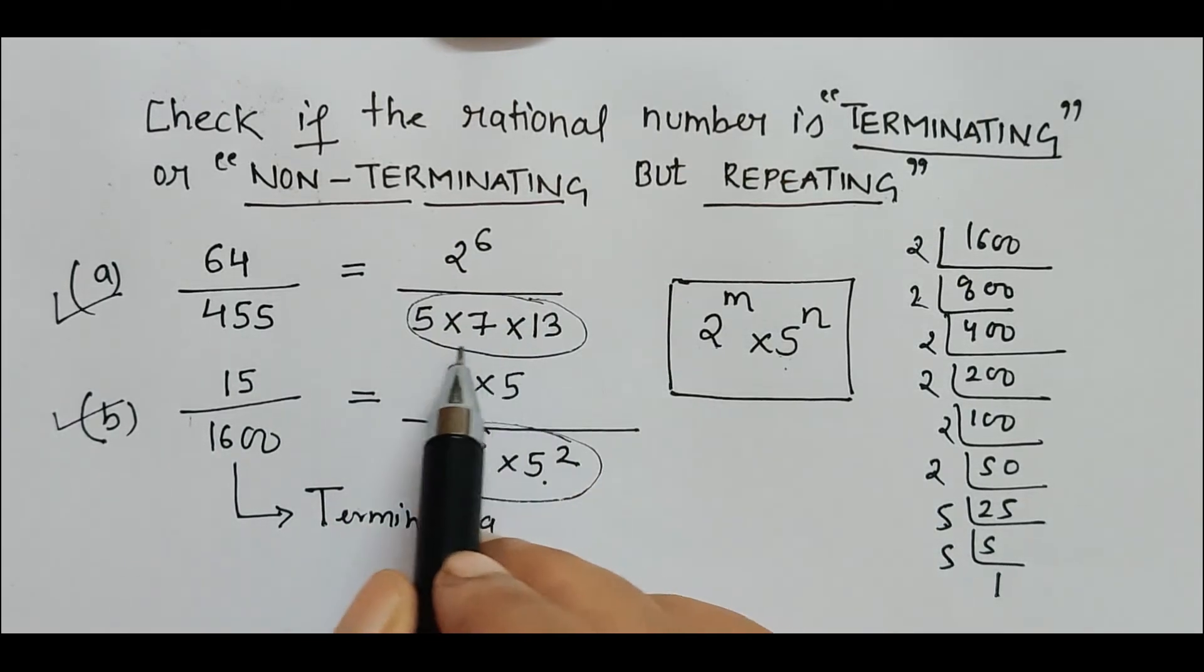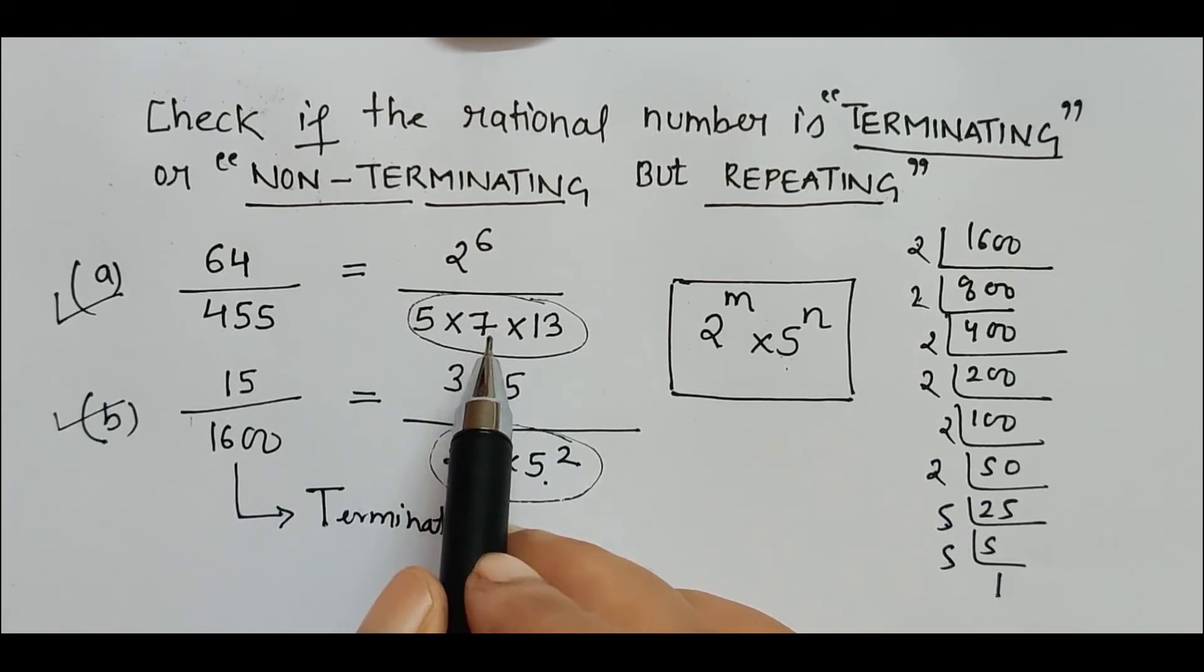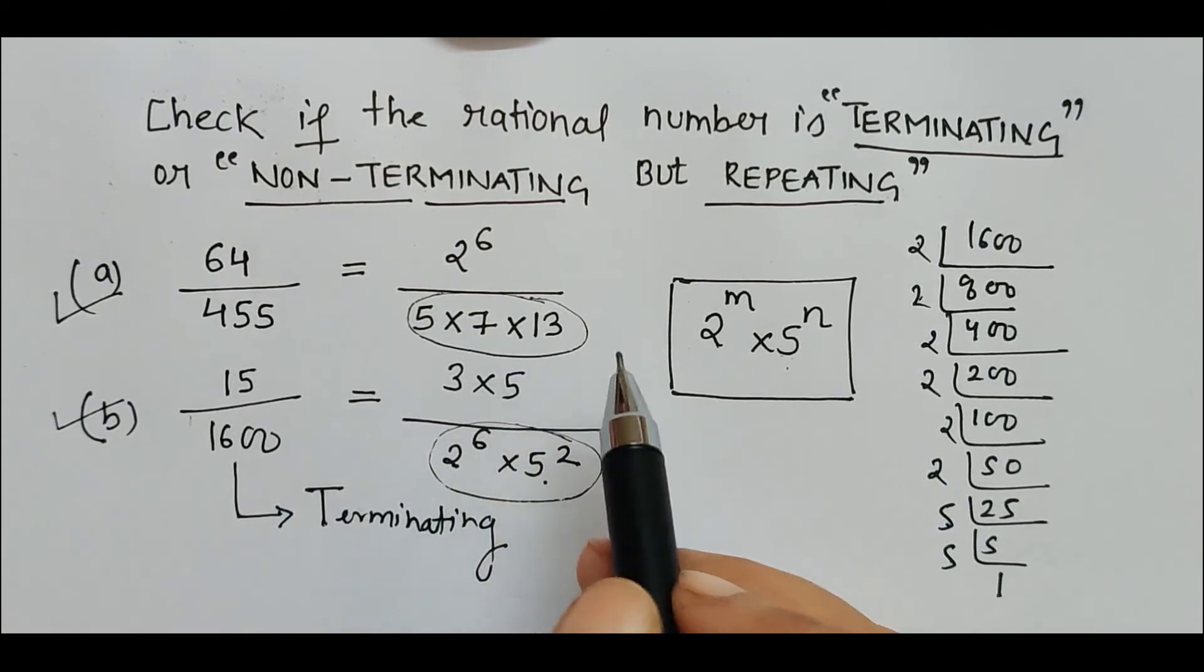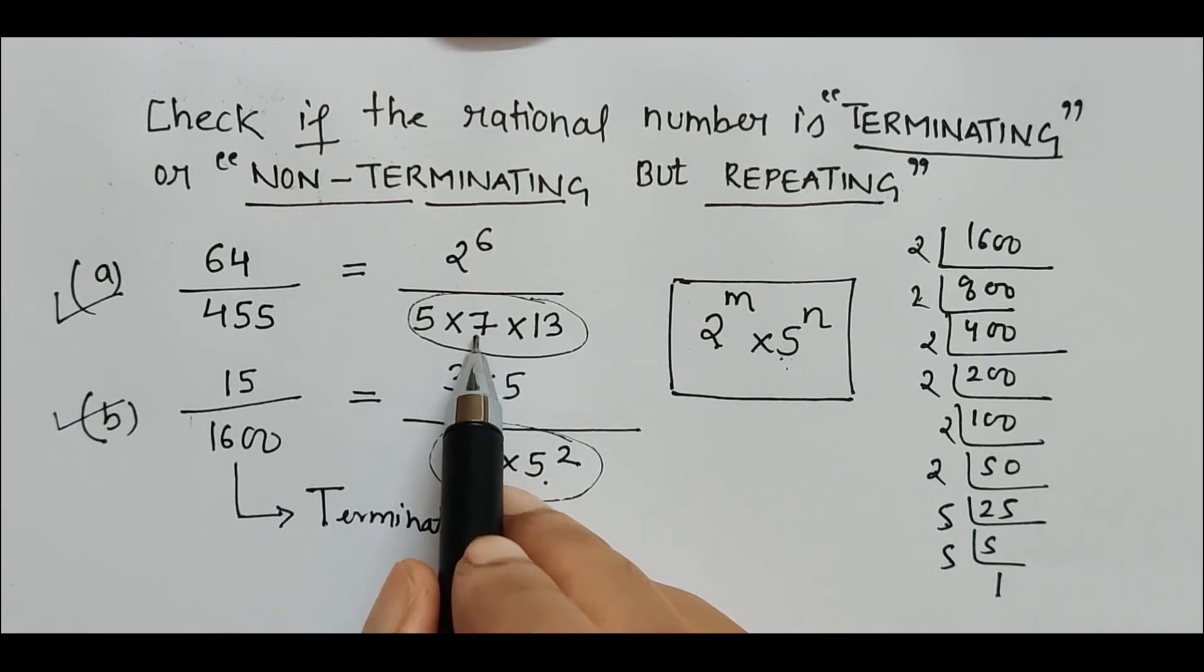There is nothing which can be cancelled. 7 cannot be cancelled from the denominator. In this case, 7 remains here, which should not be there because it should contain only 2 and 5. So since it has 7 in the denominator, it will be non-terminating but repeating in nature.